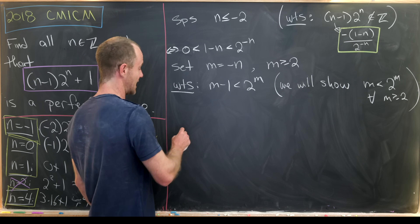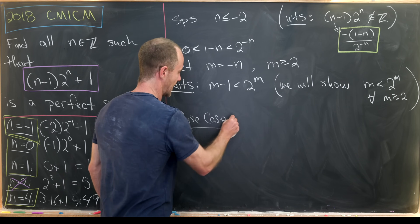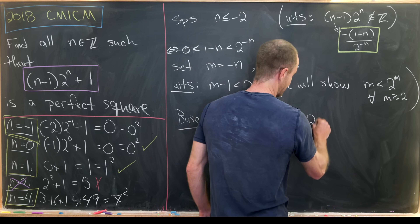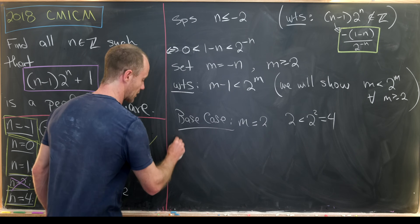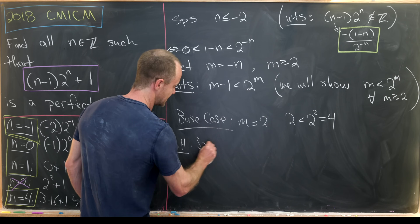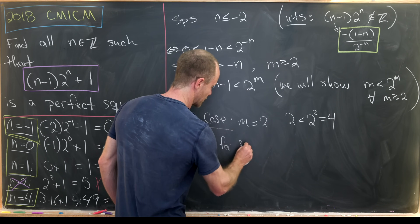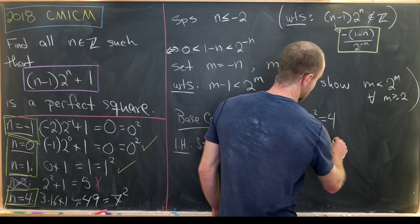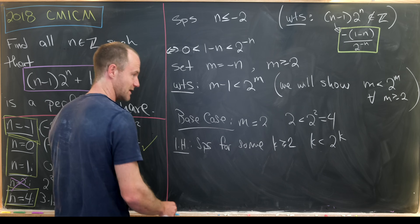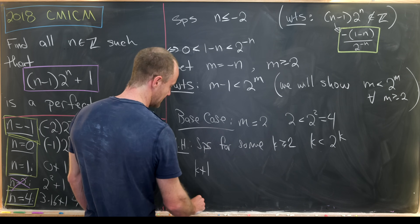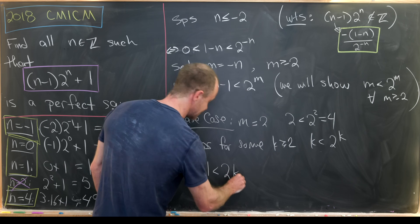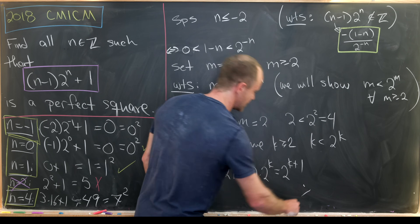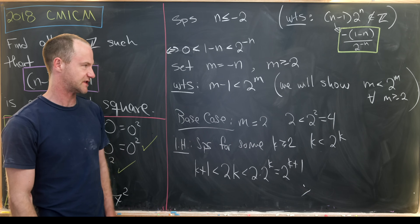We prove this by induction. The base case is m equals 2: 2 is less than 2 squared equals 4. For the induction hypothesis, suppose for some k greater than or equal to 2 that k is less than 2 to the k. Then k plus 1 is less than 2 times k, which is less than 2 times 2 to the k, which equals 2 to the k plus 1. That finishes the induction.